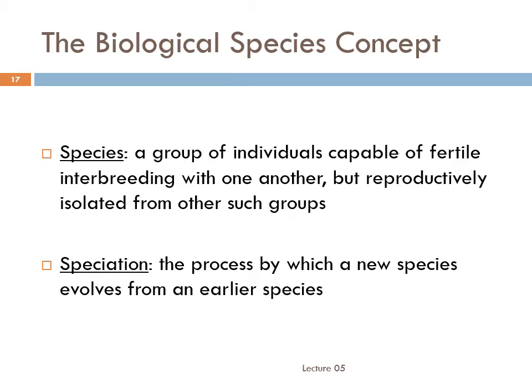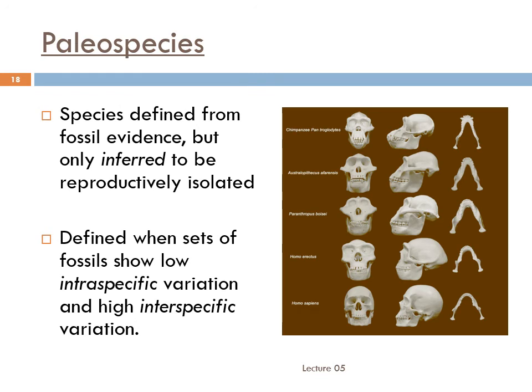We know that when those animals were alive, they must have reproduced, and uniformitarianism tells us that the idea of reproductive isolation was just as applicable in the past as it is today. But if we can't observe reproductive behavior, how can we tell which fossil animals interbred with which others? Put simply, we can't. Fossil species are not biological species at all, really. They're paleospecies — species defined from fossil evidence and inferred to be reproductively isolated.